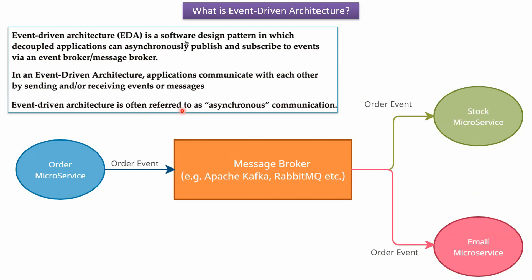Event-driven architecture is often referred to as asynchronous communication. In this example, the order microservice is not calling the stock microservice and email microservice directly to pass the order event. Instead, whenever an order is created, an order event is created and published to the message broker. From the message broker, the stock microservice and email microservice consume the order event and then perform certain functionalities.